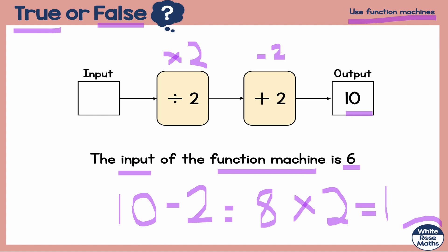8 lots of 2 is going to be 16 guys. So when the output is 10, the input is 16. This means that the claim proposed is false. It should be 16 and not 6.